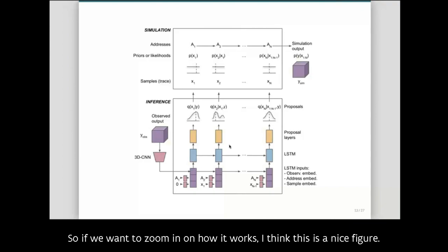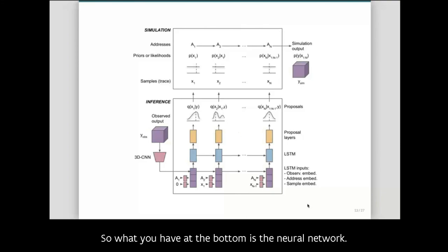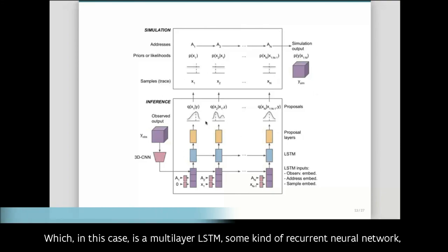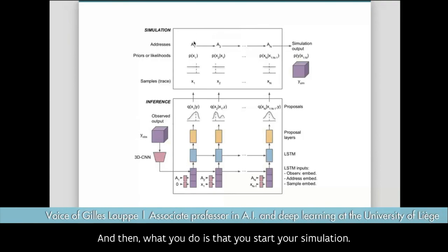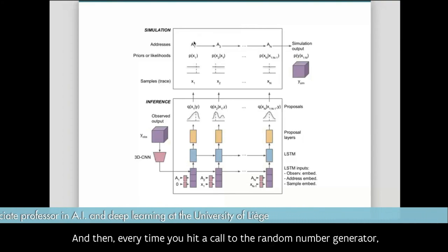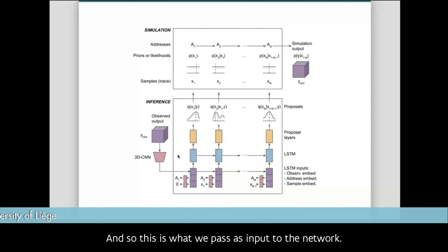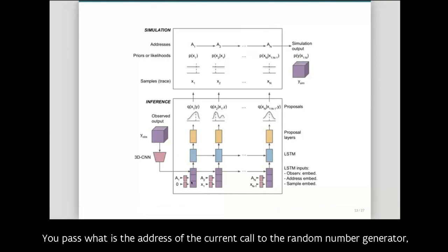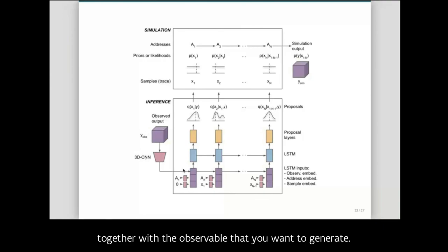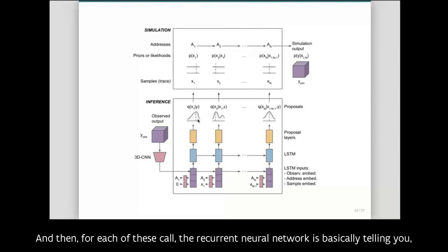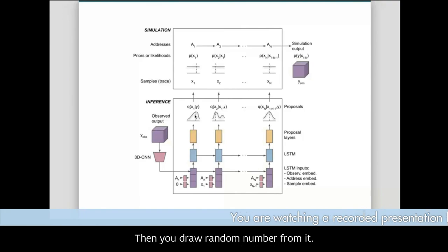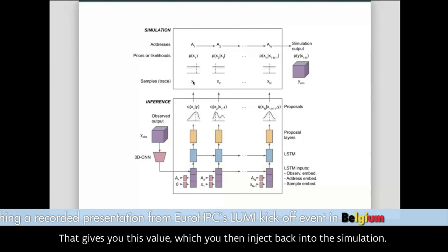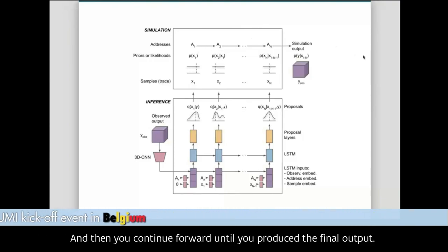Zooming in on how it works: at the bottom is the neural network — a multi-layer LSTM recurrent neural network that takes as input the observed data. You start the simulation, and every time you hit a call to the random generator, that call is identified by a unique address in the execution trace. You pass this address together with the observable to the network, and the recurrent neural network tells you from which distribution to actually draw a random number. You draw from it, inject the value back into the simulation, and continue forward until you produce the final output.